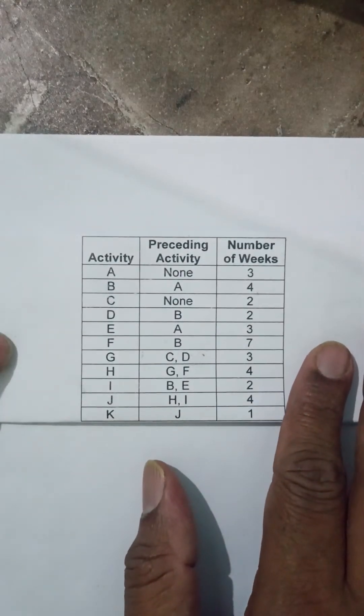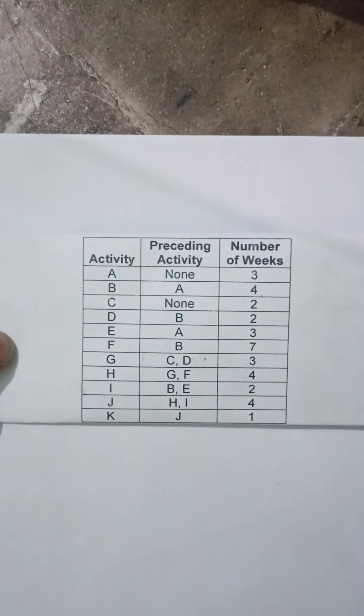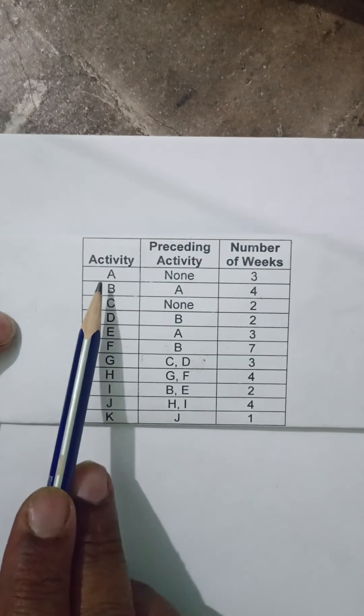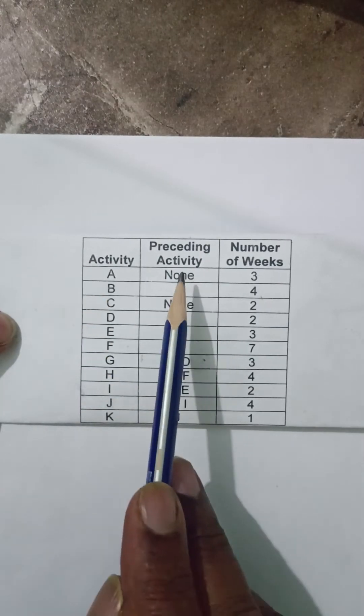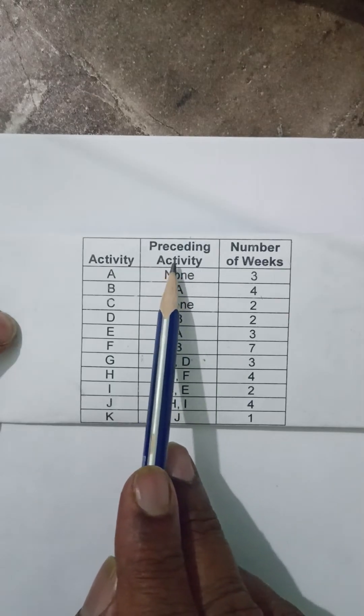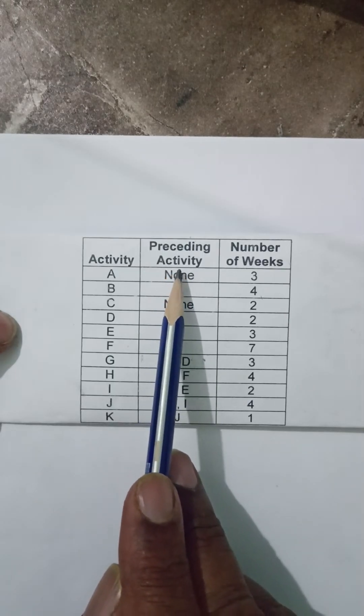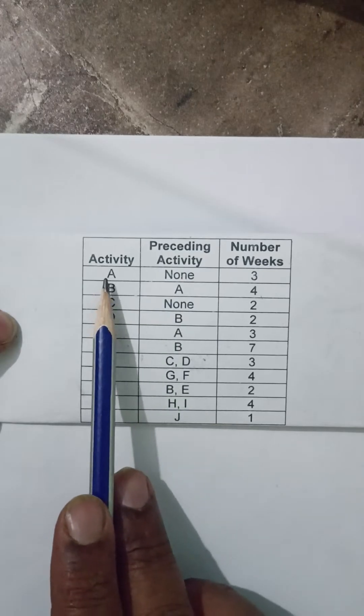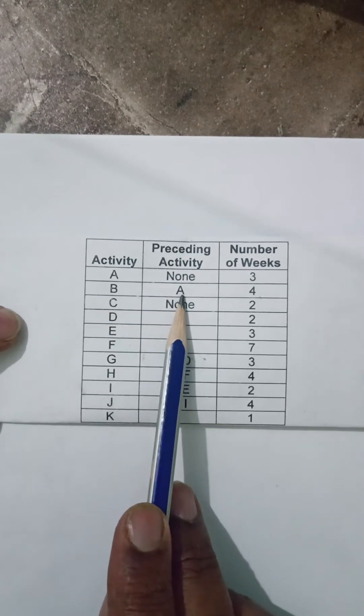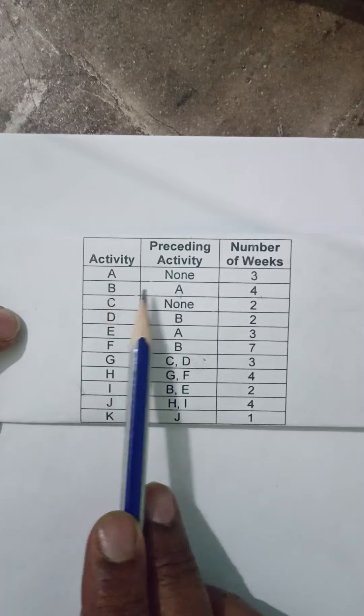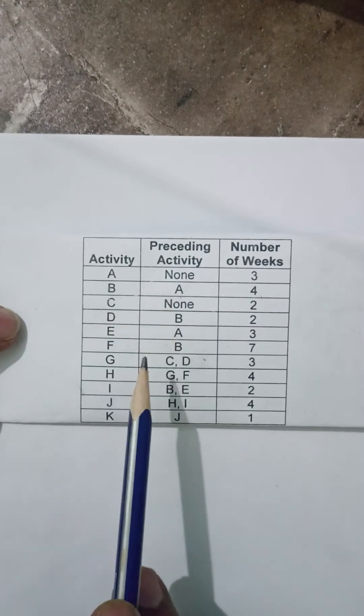First, let us understand this particular example. We have activities A, B, C, D up to K. There is precedence requirement or preceding activity given. For example, activity B can only start once A is finished. That is what this preceding activity means.